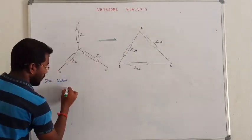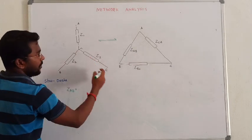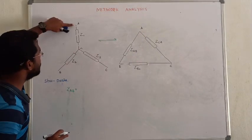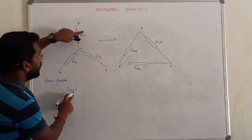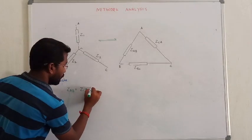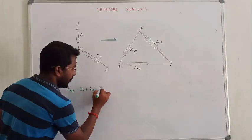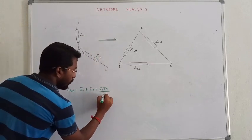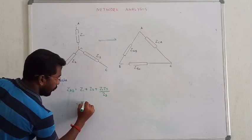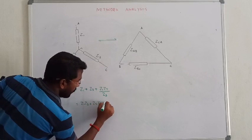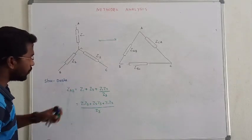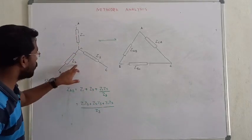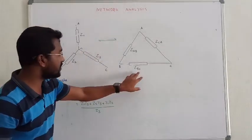First, we have the capital value of Z_AB. To know the value of Z_AB, getting back to this star network with names A, B, C. Z_AB equals Z1 plus Z2, plus Z1 into Z2 divided by Z3. If you observe the numerator when calculating Z_AB, the term in the numerator is Z1·Z2 + Z2·Z3 + Z3·Z1.